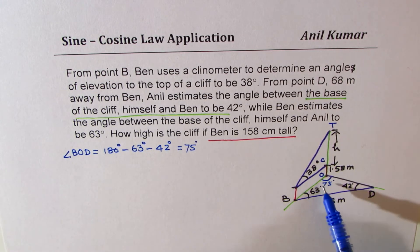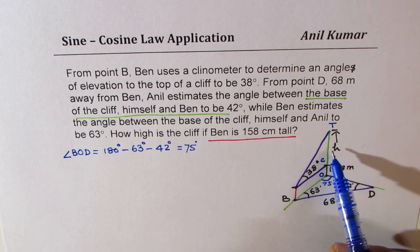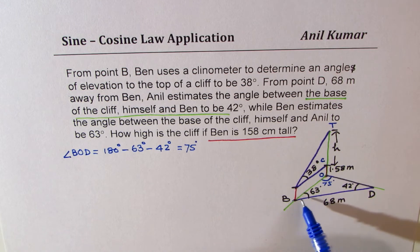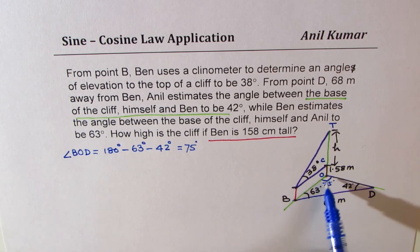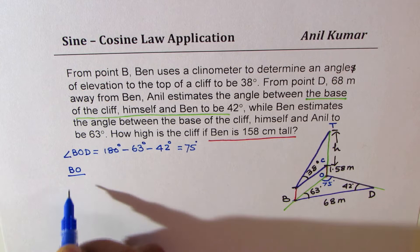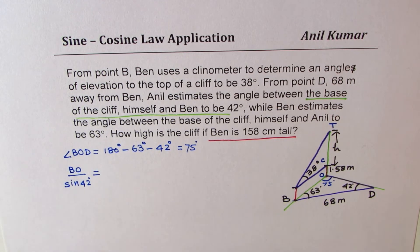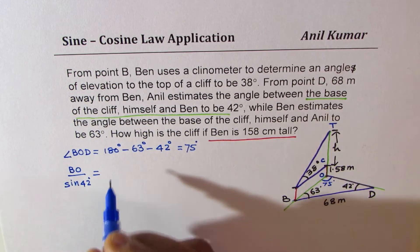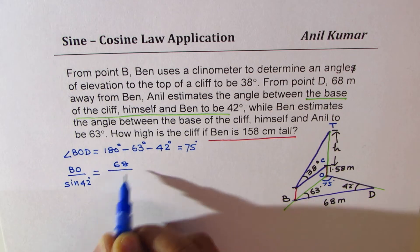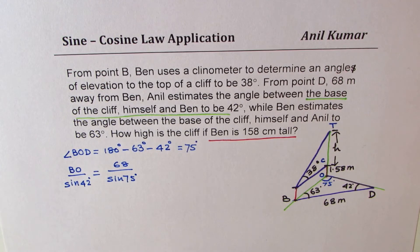Now, we should find the length BO. Since we have to find the height, we can always use tan ratio to find the height if we know B to O. So to find BO, we'll use sine law. We know the opposite side and angle combination. So we can write BO over the angle opposite is 42, sine of 42 degrees should be equal to what is given as 68 and 75. So 68 over sine of 75 degrees.